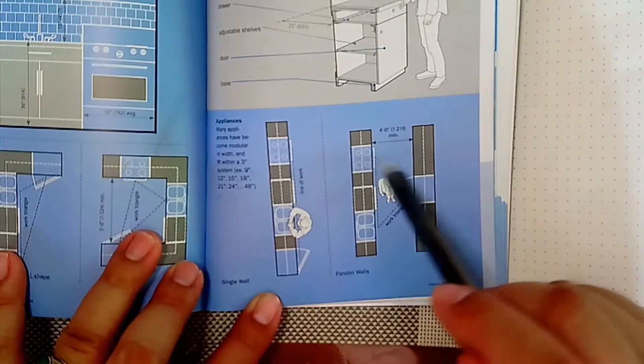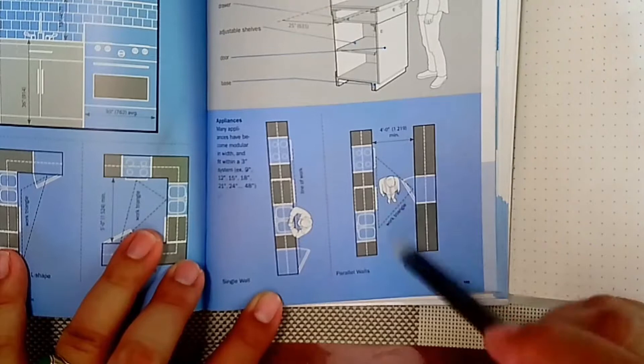It should have a minimum of 1.2 meters clearance for at least one person or two people to pass by.